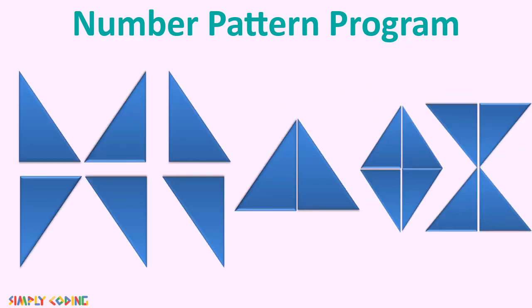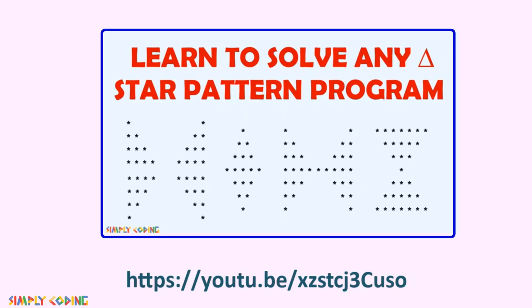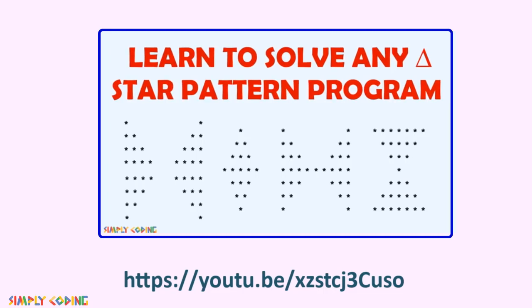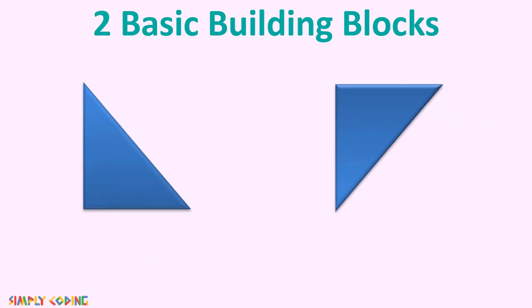First thing we need to learn is the pattern — it is the shape which contains the numbers. As we just saw, the question can ask you for the same numbers in any different shape. So first you need to know how to form that shape with a basic star. If you have not watched my video to create any star pattern program, you need to pause, click on the link given, watch that video and then return. It is very important that you first know how to create the shape with just a star, as we will reuse those pattern codes here and add the number part.